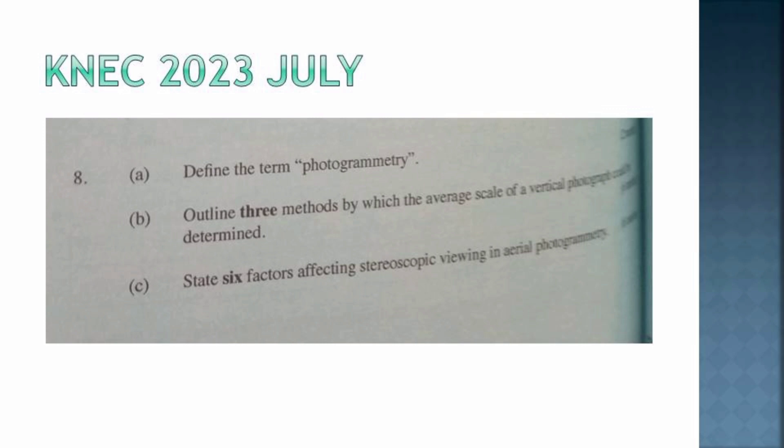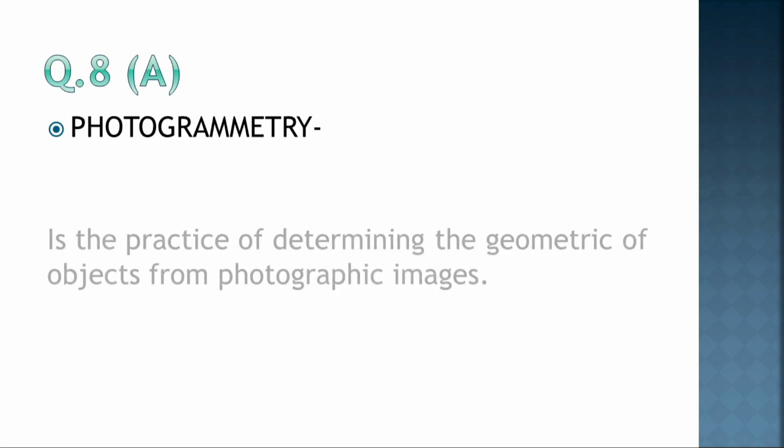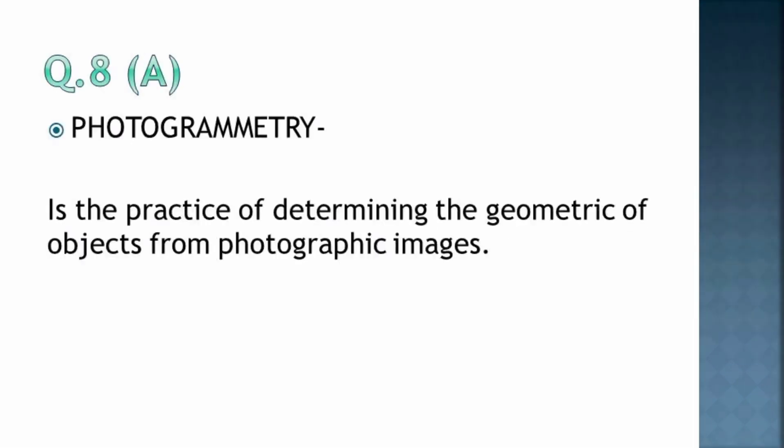Let me tackle first those three questions. Photogrammetry is the practice of determining the geometric properties of objects from photographic images. Here we can get much detail from photographs including measurements, geographical information. We have photos with geo-tagging so we can get information such as latitude, longitude, and even elevations.